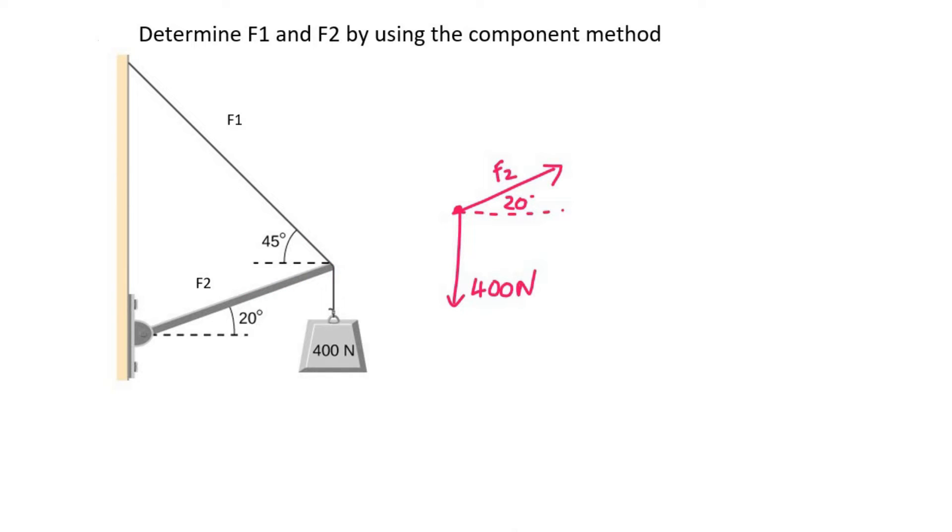Now what is this piece of rope here doing? Well, that's pulling to the left, so it's going in that direction, and that angle is 45 degrees.